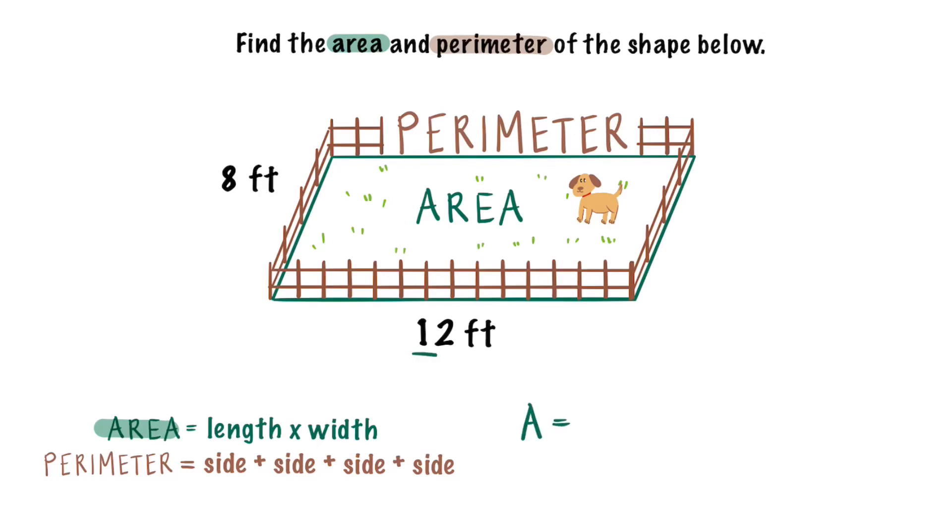So A equals the length, which is 12, times the width, which is 8. And we know 12 times 8 is 96 feet squared for area.